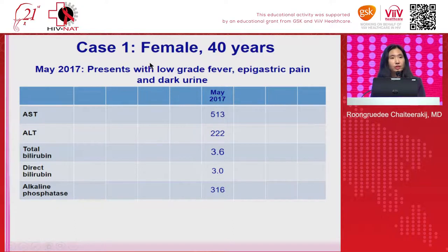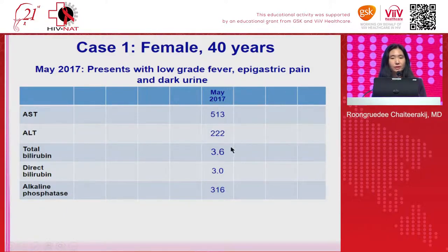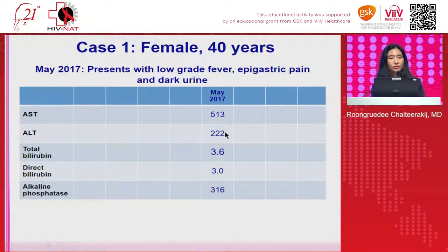She was referred to the liver clinic with the problem of low-grade fever, epigastric pain, and dark-colored urine. This is the first day that she came to visit me in May 2017. You can see that her liver function test shows elevation of AST and ALT. She has mild jaundice and elevation of alkaline phosphatase.